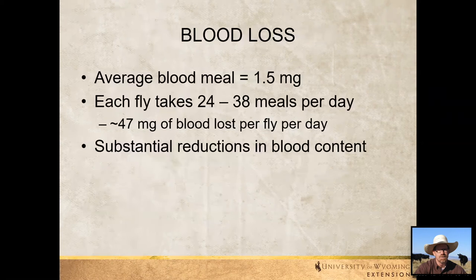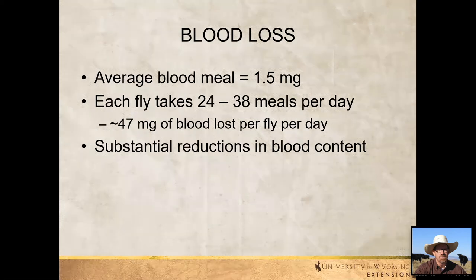In terms of blood loss, each blood meal averages about 1.5 milligrams. Each fly takes anywhere from 24 to 38 blood meals per day. This ultimately leads to a substantial reduction in blood content, and physiologically that's not a positive situation for an animal.